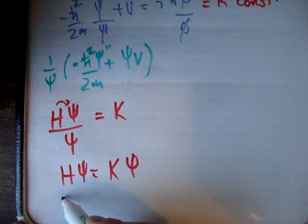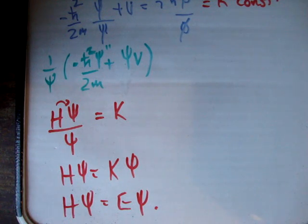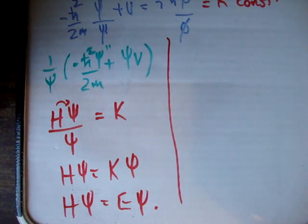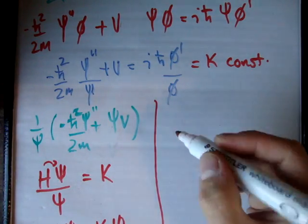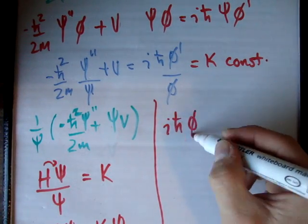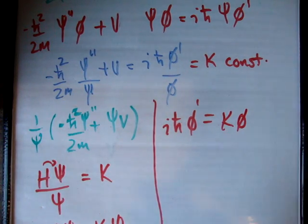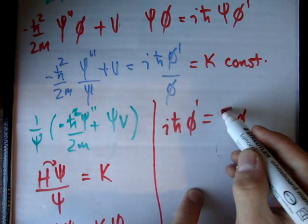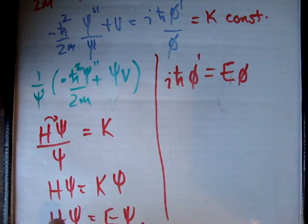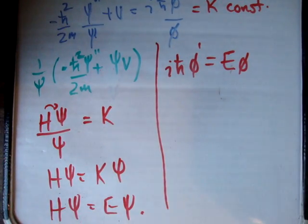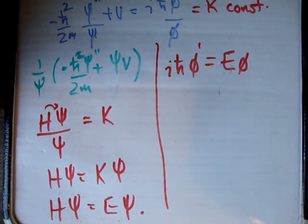And you might recognize that this is H-hat psi, and the constant happens to be the energy. On the other side, we had i times h-bar phi prime over phi equals a constant. So what we get is i times h-bar phi prime equals k times phi, and of course this constant is equal to the energy of the system. This here is the time-independent Schrödinger equation: the Hamiltonian on psi equals energy times psi.